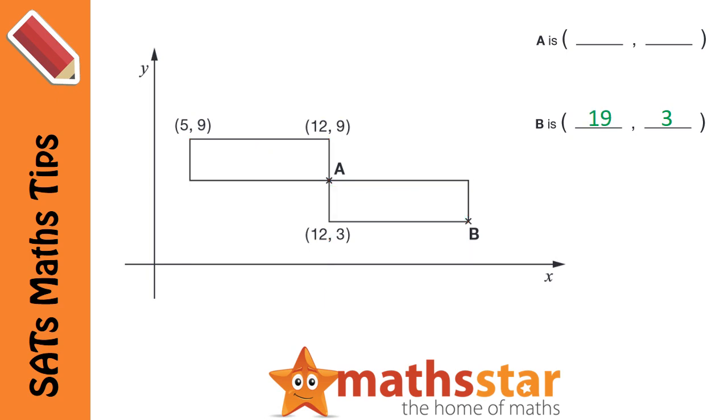Now we need to find A. We already know the x-coordinate, because A is on the same line as these two points. Their x-coordinate is 12, so it's the same for point A.